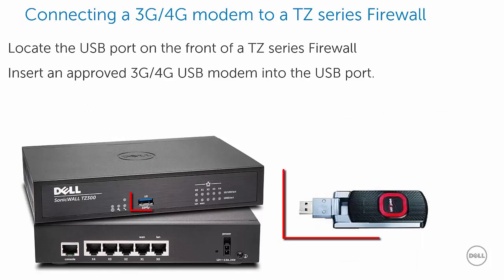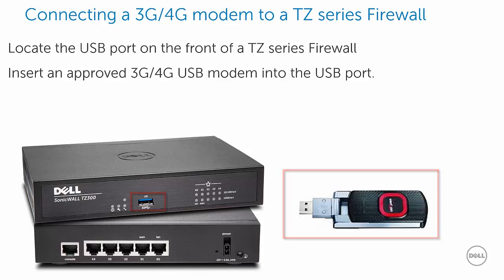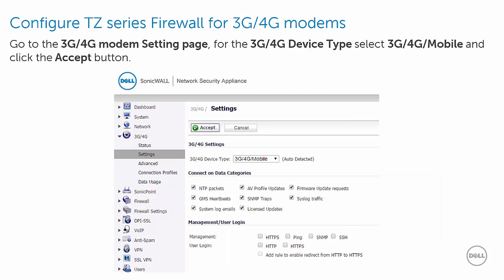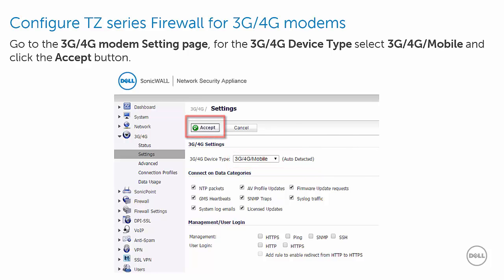To install a 3G, 4G modem on a TZ-Series firewall, plug an approved 3G, 4G USB modem into the USB port. You can set up the 3G, 4G modem on the 3G, 4G modem setting page. For device type, select 3G, 4G mobile, and click the Accept button.